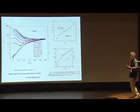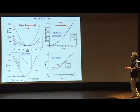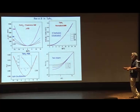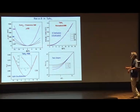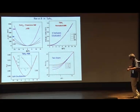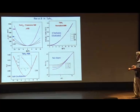In the transverse MR of TaAs₂, plotted as resistance versus magnetic field at various temperatures, all curves collapse with an H² dependence. Interestingly, in the low-field region there appear to be two slopes — a transition from a lower exponent to H² — which we need to investigate further.